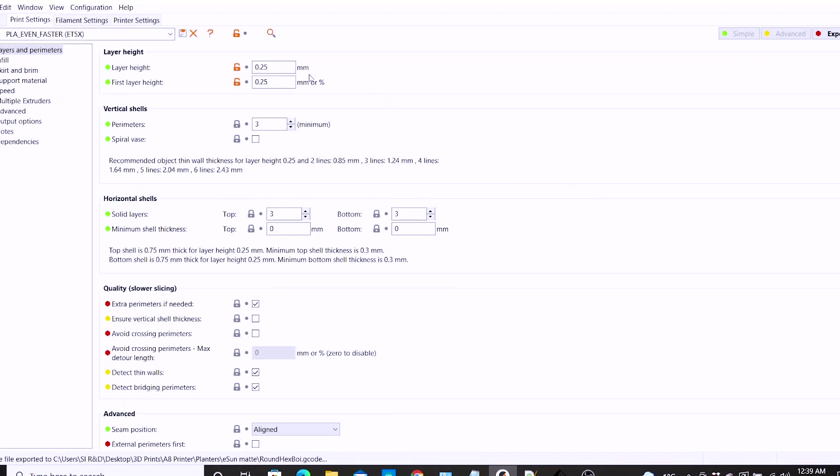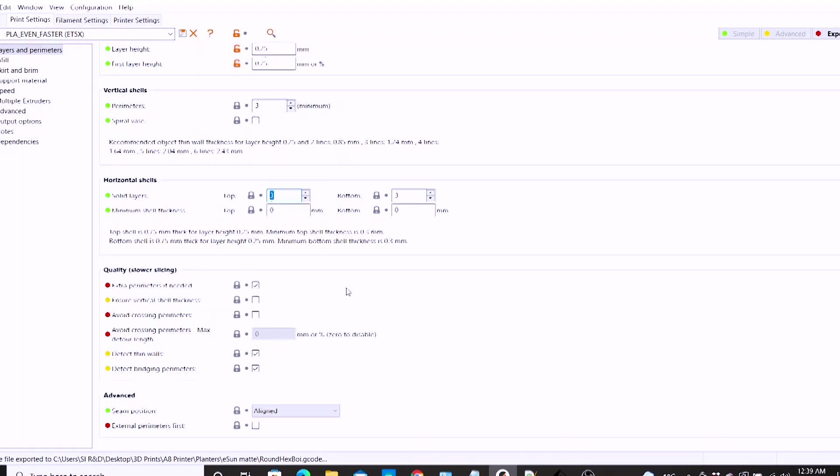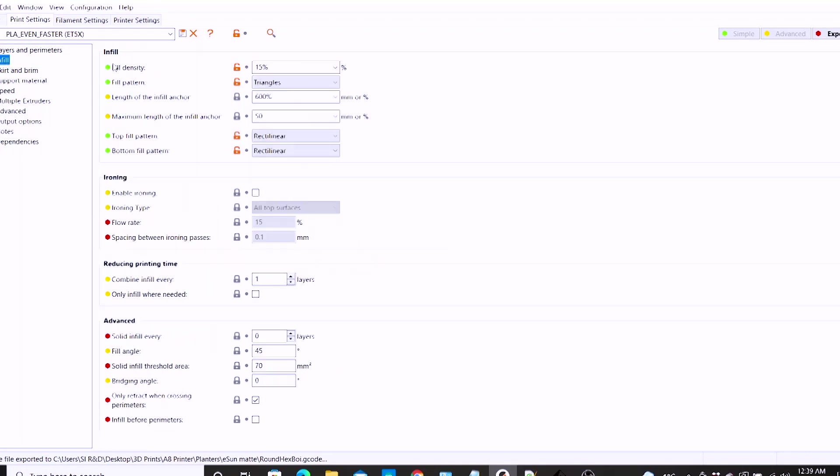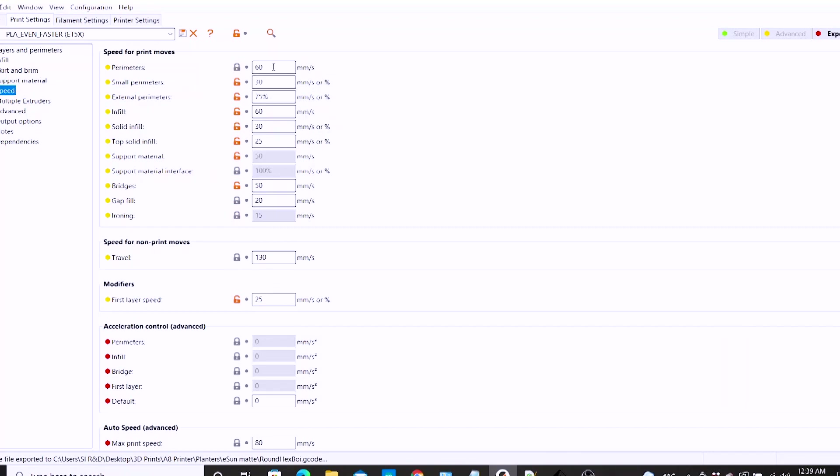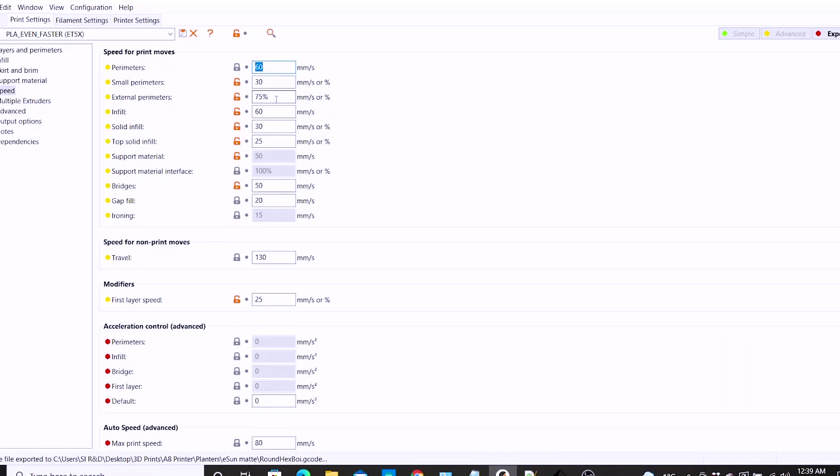Since we keep talking about settings, let's take a look at the settings I settled on. 0.25 millimeters were the layer height of all the prints in this video. The solid layers both in the horizontal and vertical direction, so the top and side shells, were three layers thick. Infill - nothing crazy going on here, pretty much everything's standard. I left it at 15% triangular infill pattern.